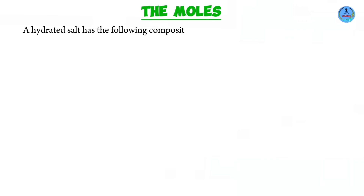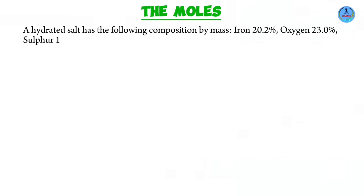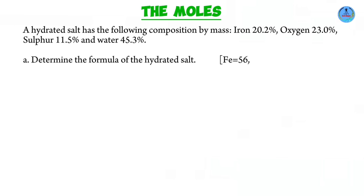Moving on to our next question. A hydrated salt has the following composition by mass. A hydrated salt is simply a salt that contains water of crystallization. We have iron 20.2%, oxygen 23%, sulfur 11.5%, and water 45.3% — this is the water of crystallization. We need to determine the formula of the hydrated salt.